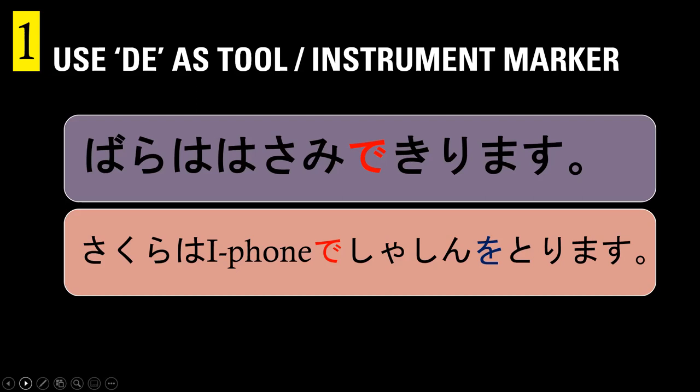A second example: 'Sakura wa iPhone de shashin o torimasu.' Sakura is the flower — that's the topic marked by 'wa.' 'iPhone de' is the means or instrument used to take the picture. 'Shashin o torimasu' means you take the picture — not the flower, but a picture of the flower. So it's very important to distinguish the use of particles 'wa,' 'de,' and 'o.'